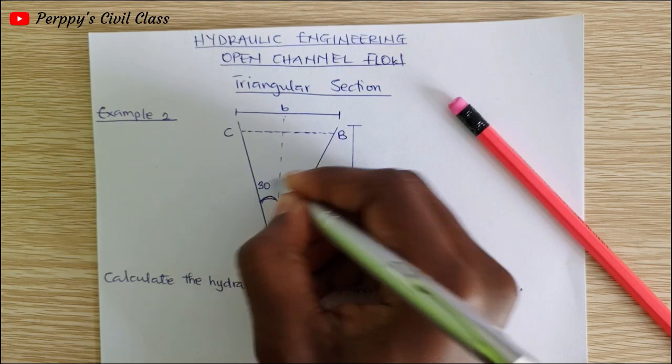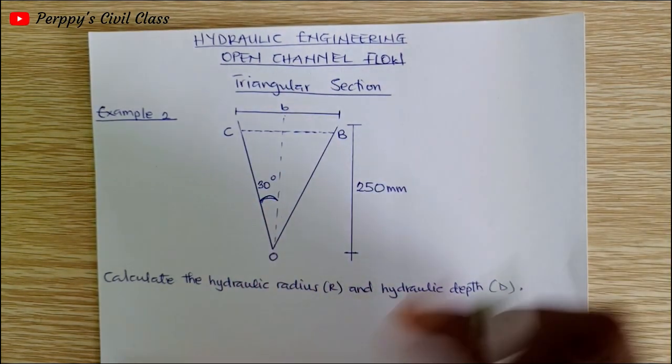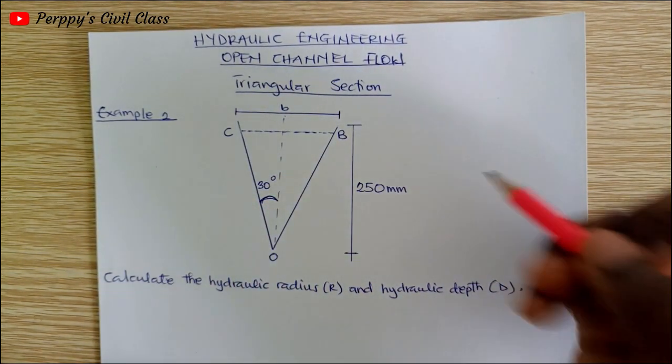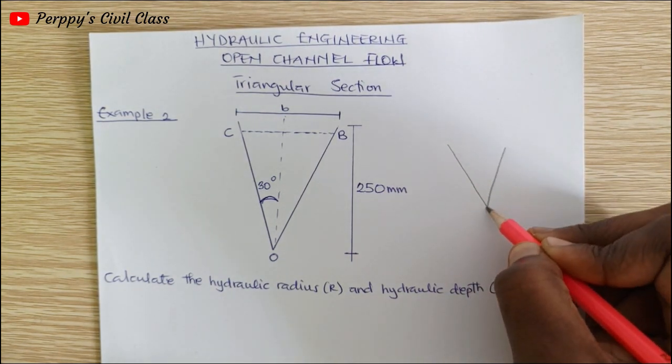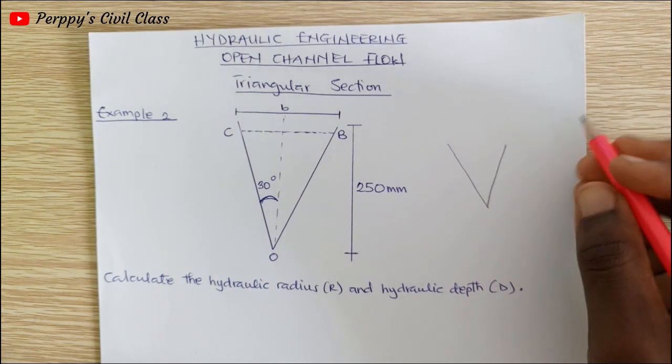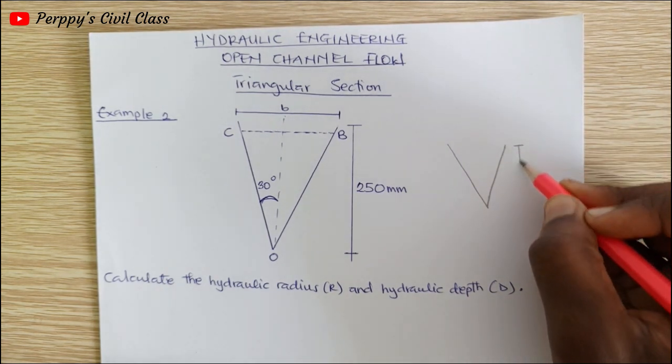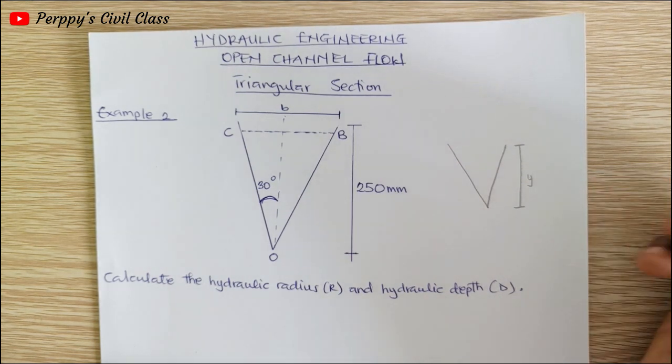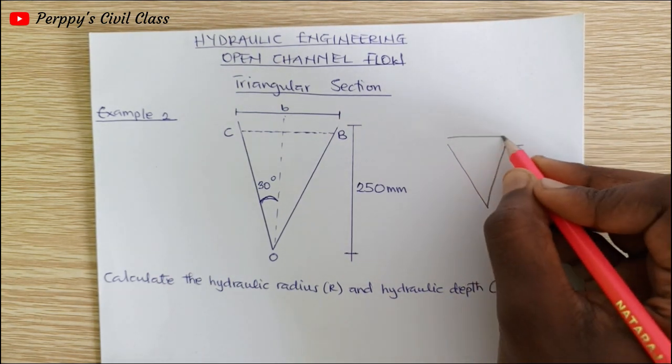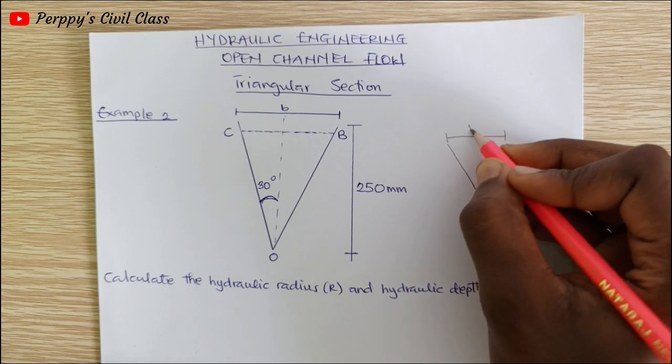Let's say we have this triangle here with a depth of y and a top width of b.